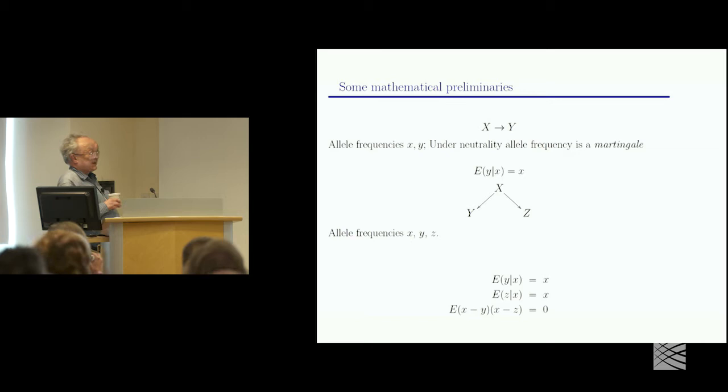It's about a simpler demographic event as you could imagine, and we have an allele frequency, little x for X population, little y for the Y population.